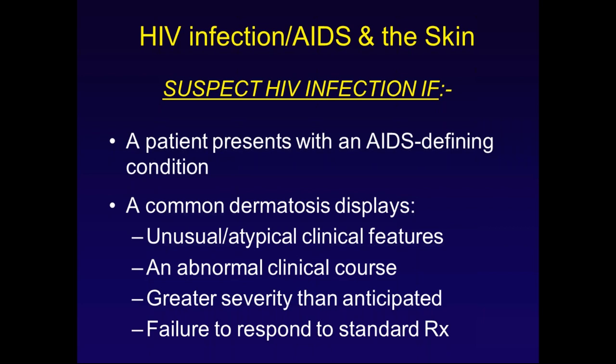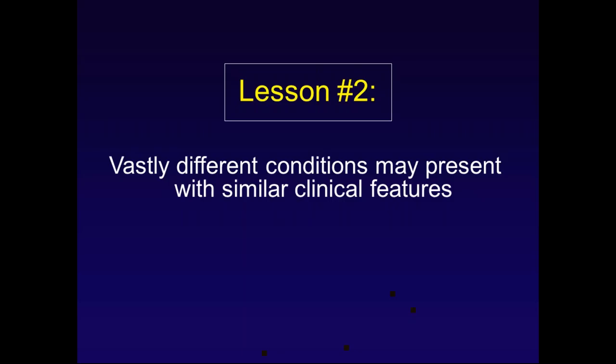Unusual or atypical clinical features should concern you. If a known condition pursues an abnormal course, that's disconcerting. If a disease has greater severity than you'd anticipate, that's also concerning. Failure to respond to standard therapy suggests there may be some aspect of immunocompromising. The second lesson, a very important one, is to remember that vastly different conditions can have very similar clinical features.